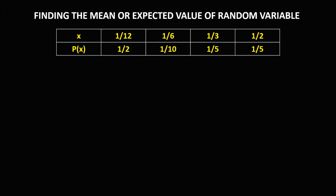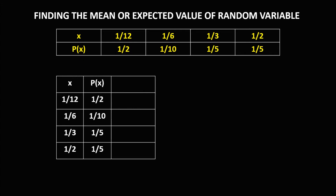For the last one, we need to put this one in a table form. For this column, multiply these two columns — that's x times p(x). When multiplying fractions, we just need to multiply the numerators and the denominators. So 1/12 times 1/2: multiply the numerators, that's 1; multiply the denominators, that's 24. So 1/12 times 1/2 is 1/24.